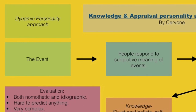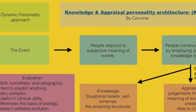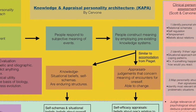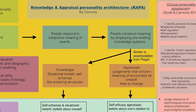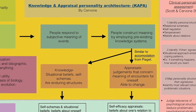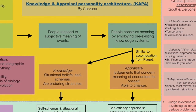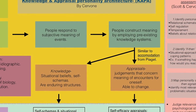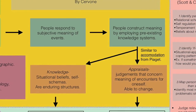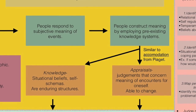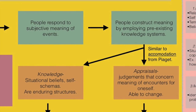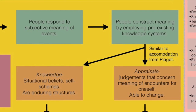First, it begins with an event occurring. This then triggers people to respond subjectively to the event, to inject some subjective meaning. As a result, people construct meaning by employing pre-existing knowledge systems, which is similar to accommodation from Piaget's Cognitive Development Theory. Placing these pre-existing knowledge systems can produce knowledge for the individual, which are situational beliefs and self-schemas — these are enduring structures — and also it can produce appraisals, which are judgments that concern the meaning of encounters for oneself, and whether one is able to change.